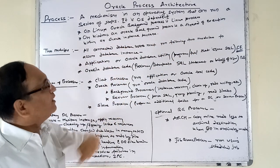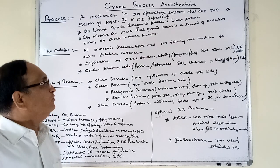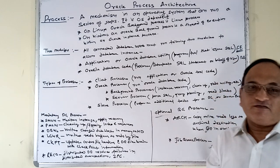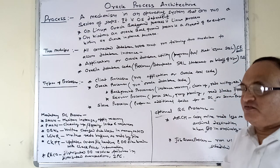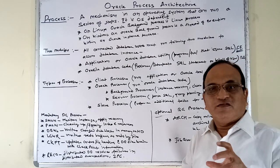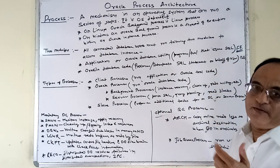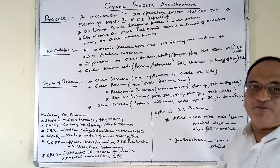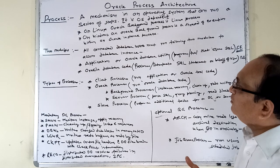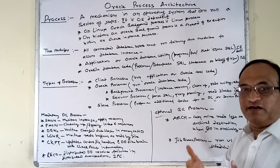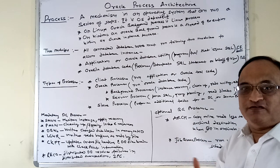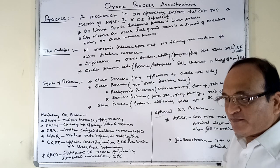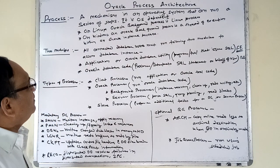In contrast, on Windows, an Oracle background process is a thread of execution within an Oracle instance process. On Windows, you will see one single service named after the Oracle instance, and under that single service there are many threads of the different processes, which are not visible in the list of services. So on Windows, Oracle processes run as threads under a single operating system process.